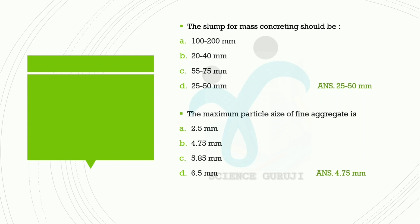Second question: the maximum particle size of fine aggregate is — Option A: 2.5 mm, Option B: 4.75 mm, Option C: 5.85 mm, Option D: 6.5 mm. Answer: 4.75 mm. Fine aggregates and coarse aggregates differ by size range and values.